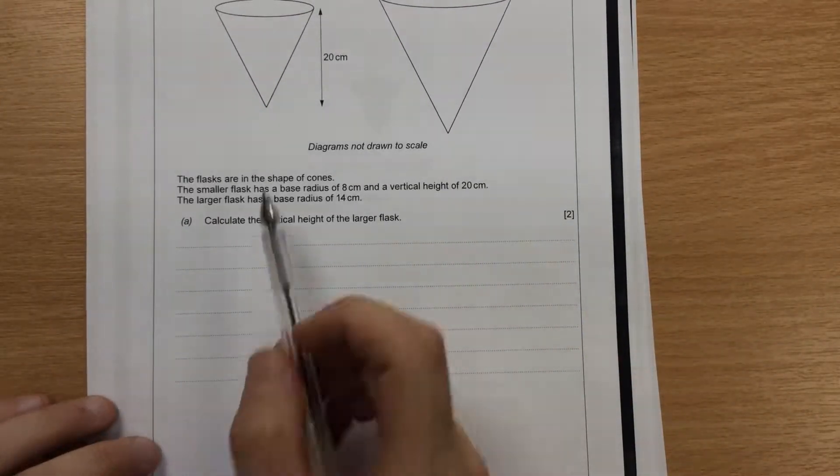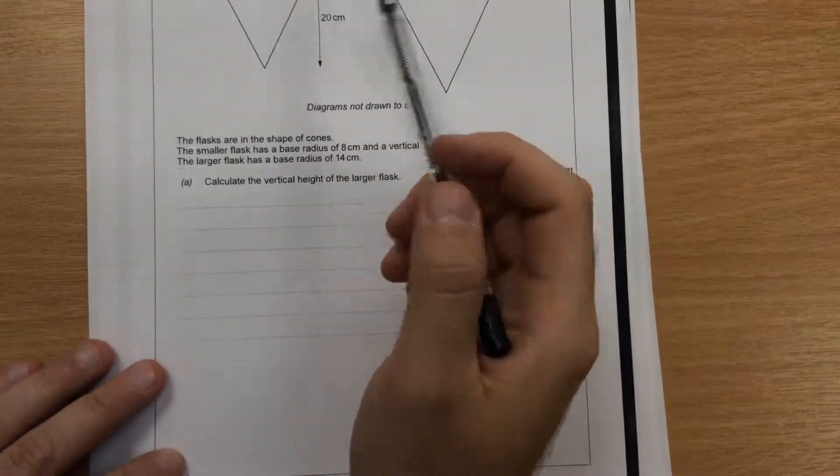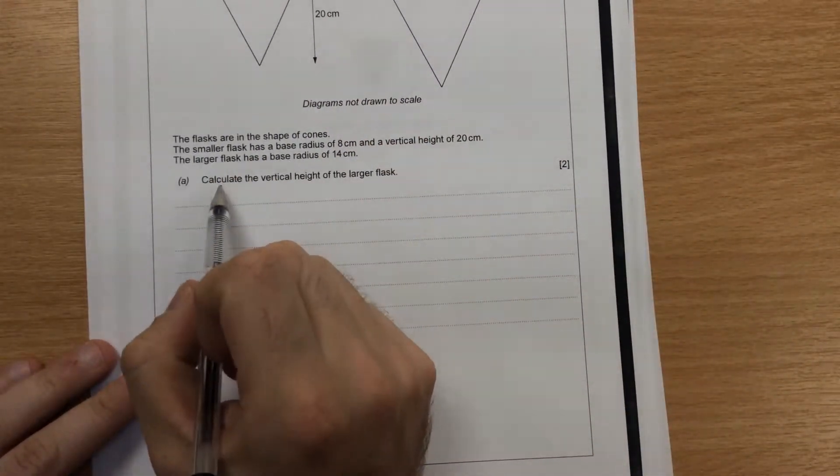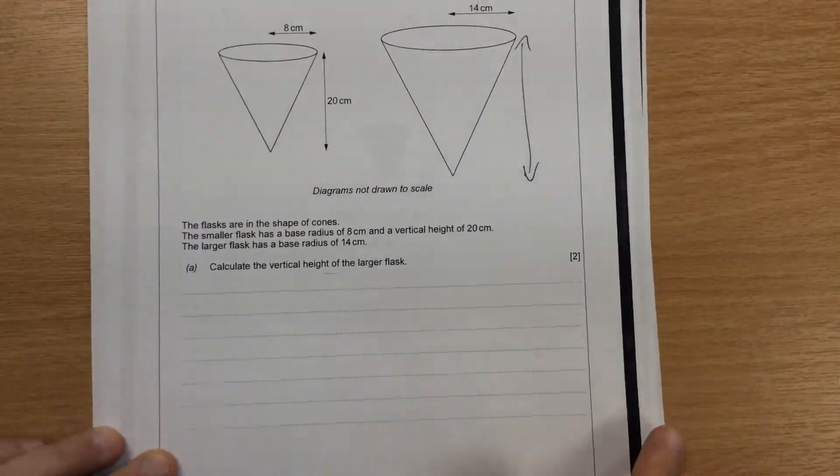Question 10. The diagram below shows two similar measuring flasks, so we're looking at similar shapes again. This asks us to find the vertical height, so we're trying to find this height here on the larger flask.